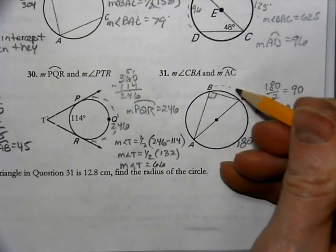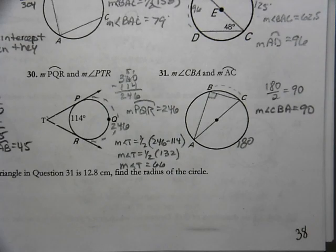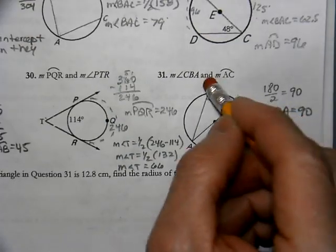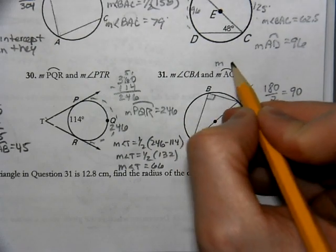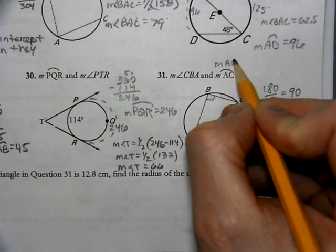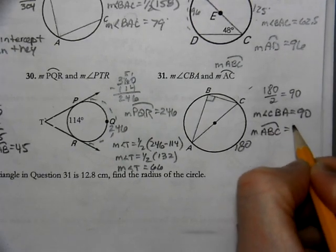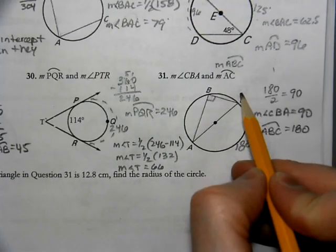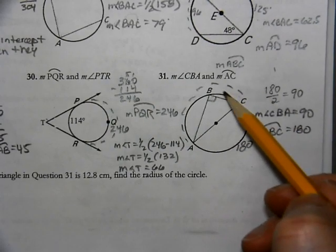Next we need to figure out arc AC — really it should be written with three letters, so let's call it arc ABC. The measurement of arc ABC is 180. We didn't have enough information to figure out the other arc — we don't know that angle or anything on that side.